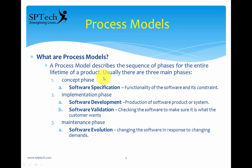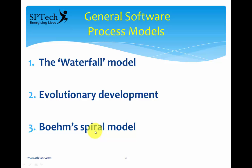Putting that in perspective, we can say that any process model would have three phases: the conceptual phase, the implementation phase, and the maintenance phase. These stages can be mapped into certain well-defined process models used in the industry. The process models we are going to discuss are the waterfall model, evolutionary development, and the spiral model. First we shall look at the waterfall model.